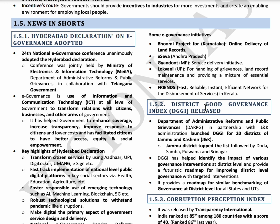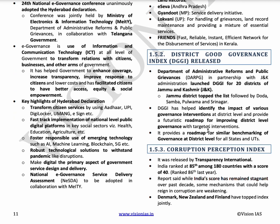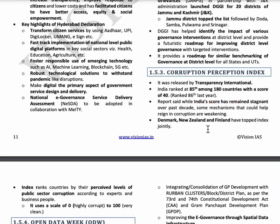The next topic is the District Good Governance Index. It was launched by the Department of Administrative Reforms and Public Grievances with the Jammu and Kashmir administration. Twenty districts of J&K participated, and Jammu district topped the index, followed by Doda, Samba, Pulwama, and Srinagar. This index aims to improve district-level governance and promote competition among districts.